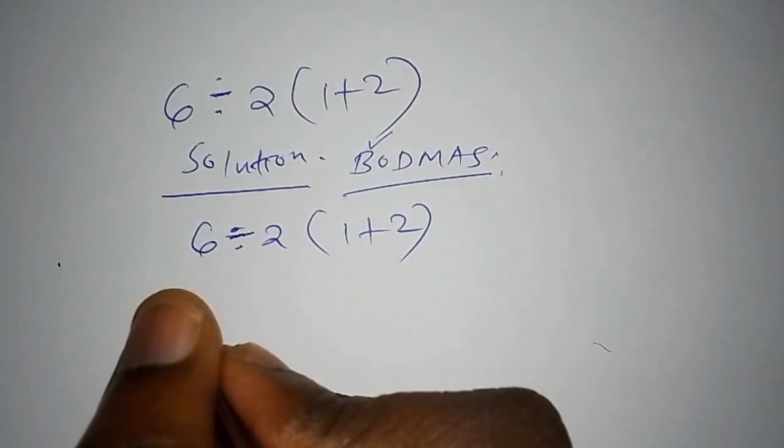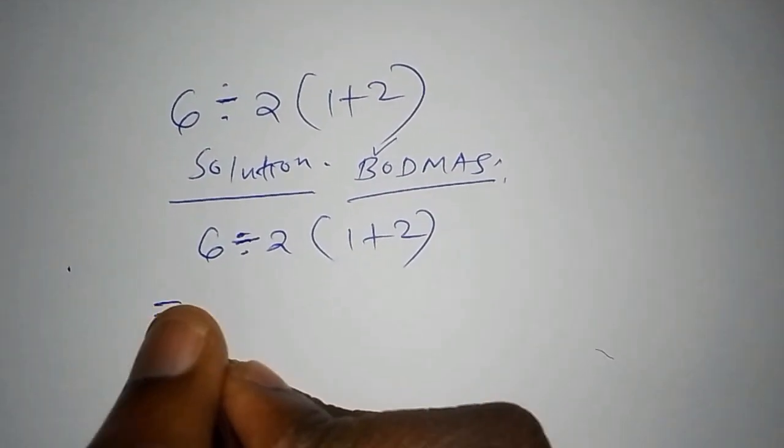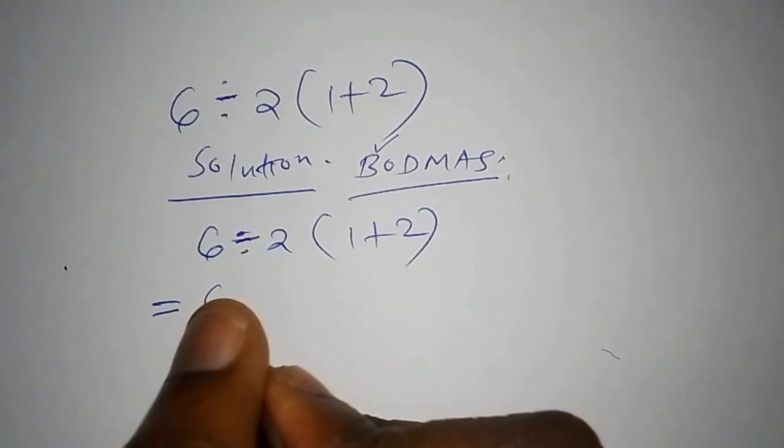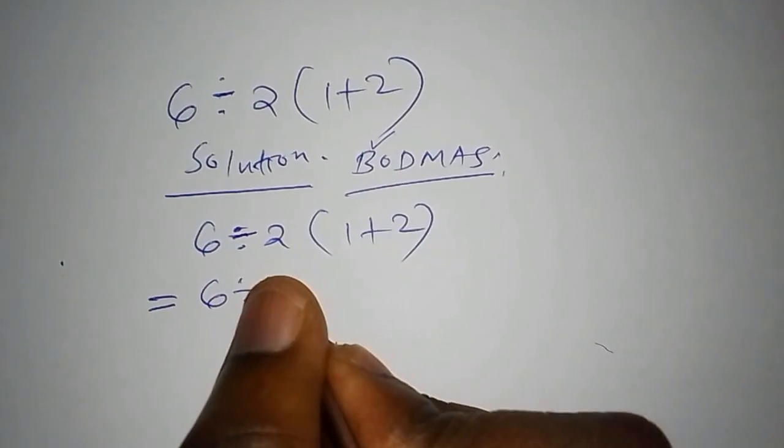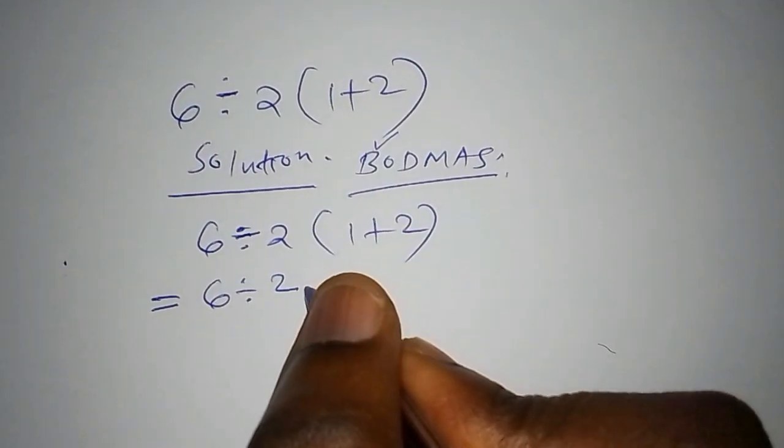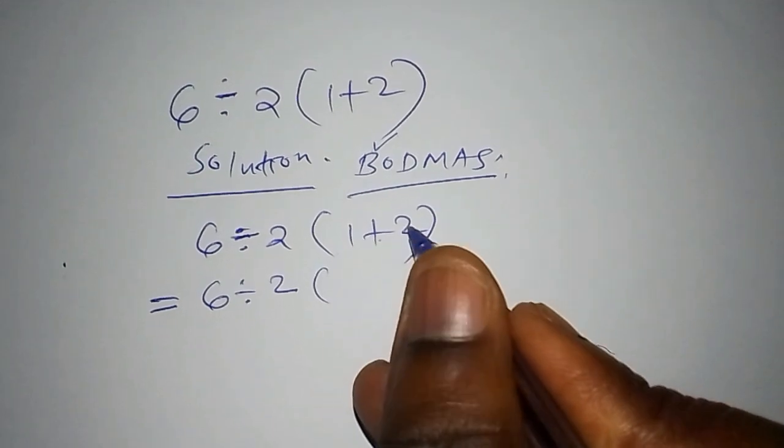So we shall say this one is equal to, so we shall write the equal sign, 6 divided by 2, then into bracket 1 added to 2 is 3.